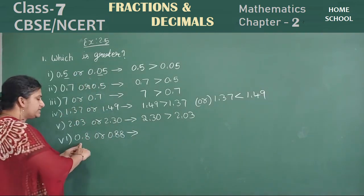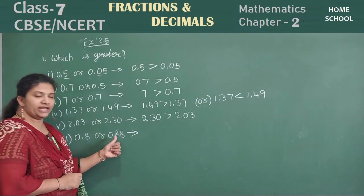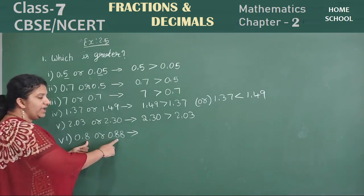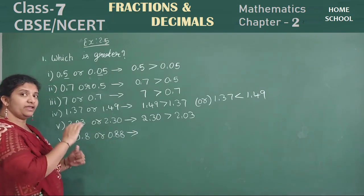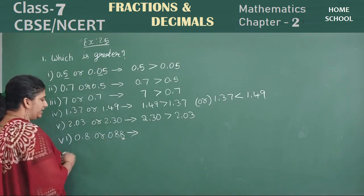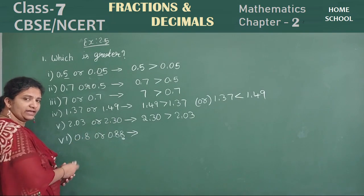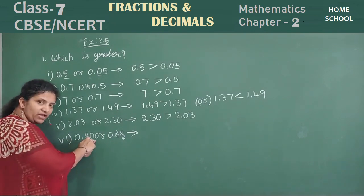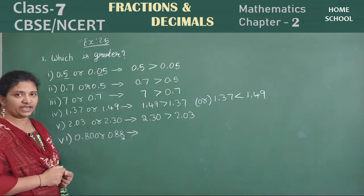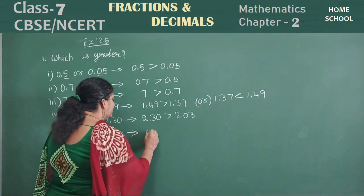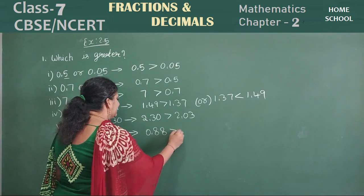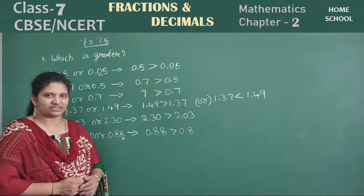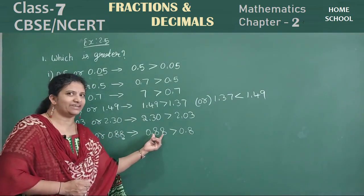Last problem here: zero point eight or zero point eight eight. Zero, zero — same. Eight, eight — same. So if same, then next value. Then what is this? Eight. There is nothing here. Nothing here means in the decimal part you can add zeros. Now see the decimal value: zero and eight — which is greater? Eight is greater. Therefore, zero point eight eight is greater than zero point eight. Zero point eight simply means zero point eight zero. Zero point eighty versus eighty-eight — eighty-eight is greater.